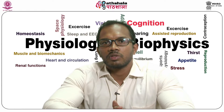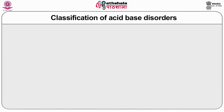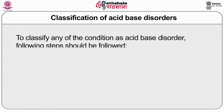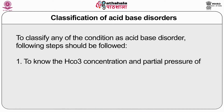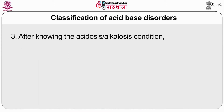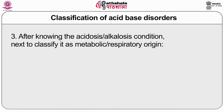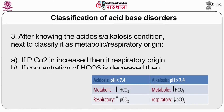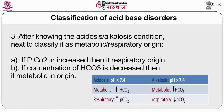To classify any acid-base disorder, the following steps should be followed: first, know the bicarbonate concentration and partial pressure of CO2 in the arterial blood. From these two values, calculate the pH using the Henderson-Hasselbalch equation. After knowing whether acidosis or alkalosis is present, classify it as metabolic or respiratory in origin. If the partial pressure of CO2 is increased, it is respiratory in origin. If the concentration of bicarbonate is decreased, it is metabolic in origin.